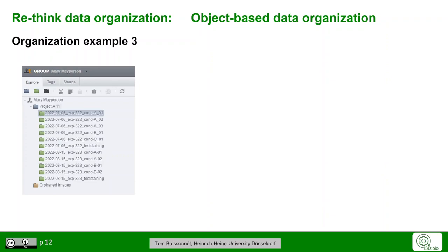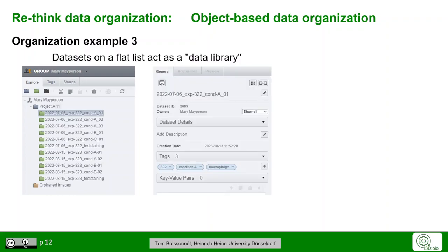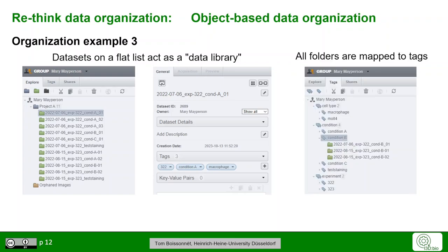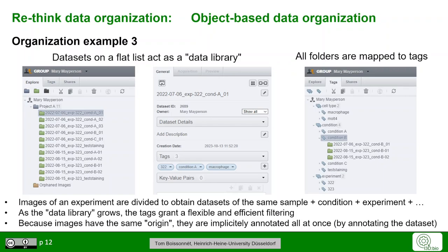In our last organization example, we show the specific organization of one of our coworkers, Tom Wassonet at the Heinrich-Heine University in Düsseldorf. He likes to split the dataset as a flat list — so to say, as a data library. In this case, all the experimentation parts that come from the same sample condition, i.e. where all the metadata are the same, go into one dataset. That means annotation happens mostly at the dataset level, while only the inter-image differences are annotated at the image level. As the library grows, the tags then grant a flexible and efficient filtering, because all of those folders are mapped to those tags. This way, annotations on datasets implicitly also include annotations on the data within, thus avoiding duplications.